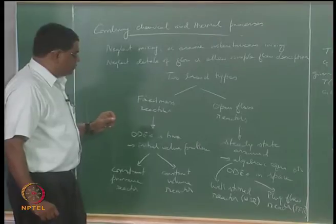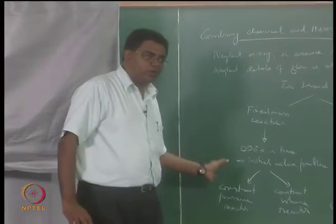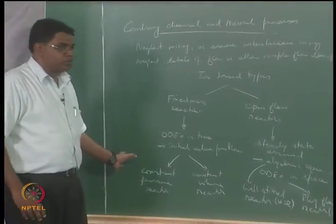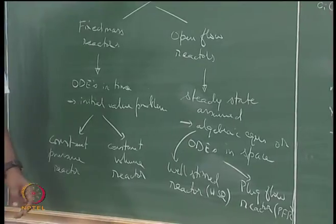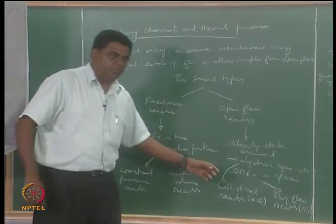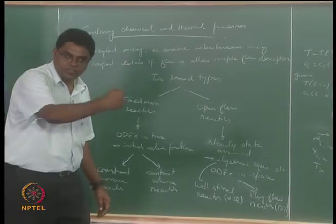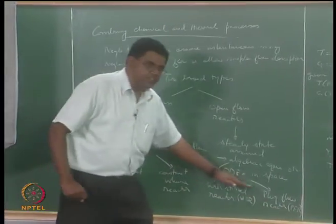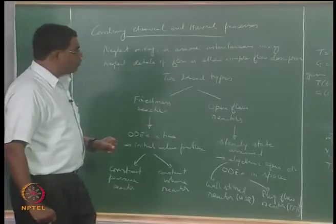You could also formulate the problem as ODEs and solve them. If we can solve ODEs in time, why not solve ODEs in space? Solving ODEs in space means allowing for only one spatial variable — a one-dimensional variation in space. This leads to the plug flow reactor, where you will have d/dx kind of derivatives showing up, representing spatial variation.